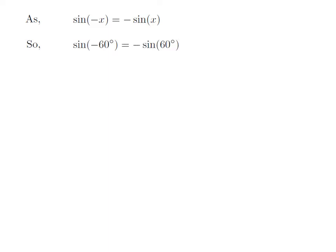Let us apply the above identity for sine of minus 60 degrees. Here, x is 60 degrees. So, sine of minus 60 degrees is equal to minus sine of 60 degrees.